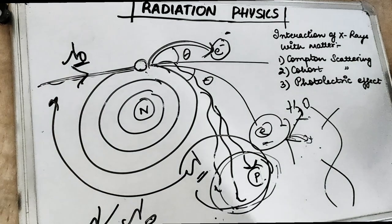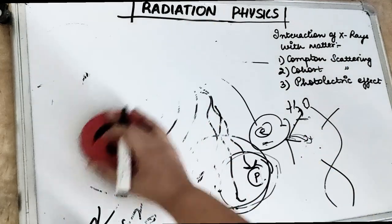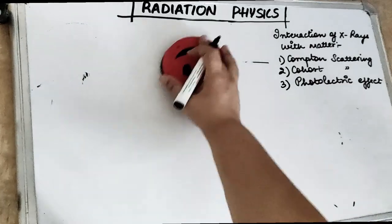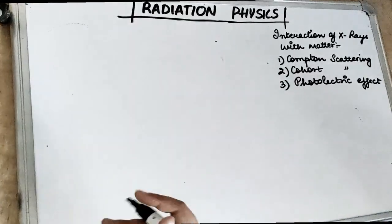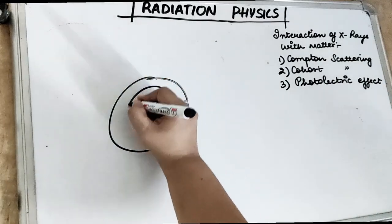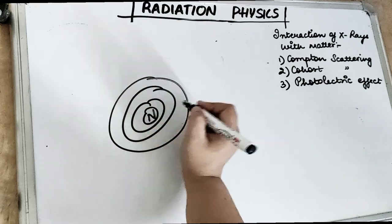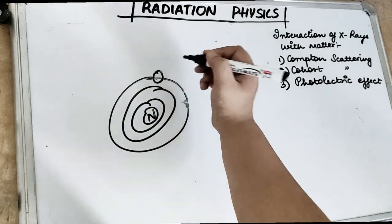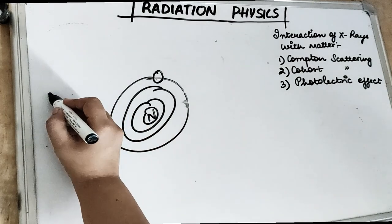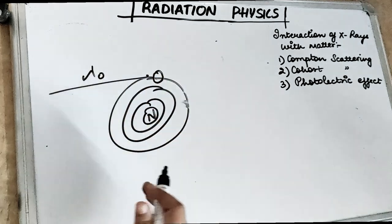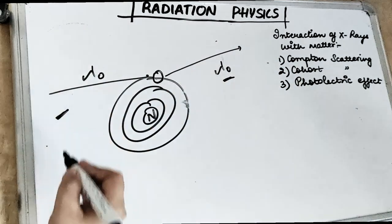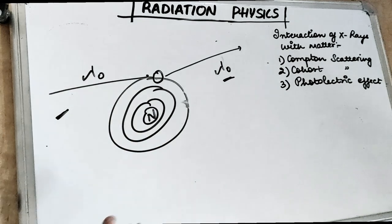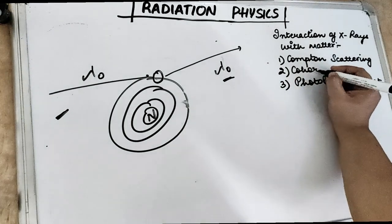The next interaction is coherent scattering. In coherent scattering, there is no loss of energy — unlike Compton scattering which loses some energy in the form of a scattered photon. In coherent scattering, the photon comes in with energy lambda naught and makes a slight deviation. The energy is almost the same — there is no loss of energy in coherent scattering.